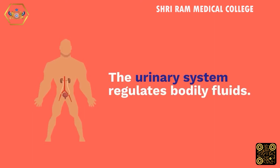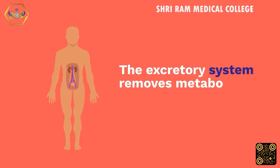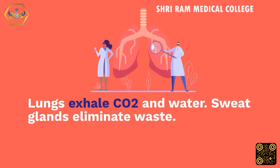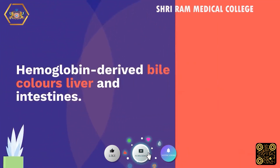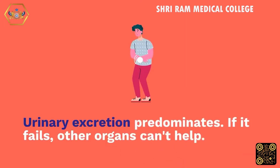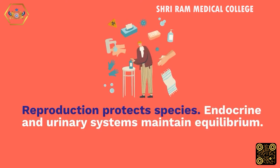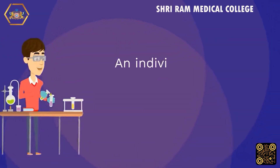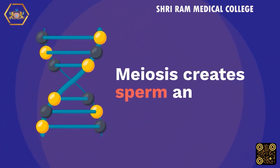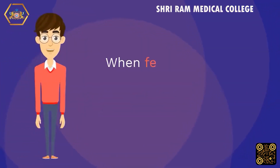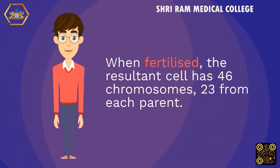The urinary system regulates bodily fluids, while the excretory system removes metabolic waste. The lungs exhale CO2 and water, and sweat glands eliminate waste. Urinary excretion predominates; if it fails, other organs cannot compensate. Reproduction protects the species. The endocrine and urinary systems maintain equilibrium. An individual can live a long, healthy, happy life without progeny, but the species must persist. Meiosis creates sperm and eggs. When fertilized, the resulting cell has 46 chromosomes — 23 from each parent.